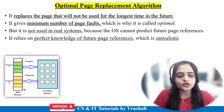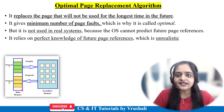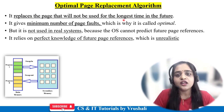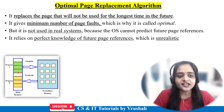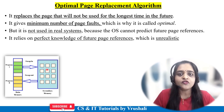Sometimes what happens is the CPU demands page number 4, but currently the main memory is full — there is no vacant space available for page number 4 for execution. So when your RAM is full, the optimal page replacement algorithm is used. It replaces the page that will not be used for the longest time in the future, moving one of the pages in main memory to secondary memory and making free space available for the new program to execute.